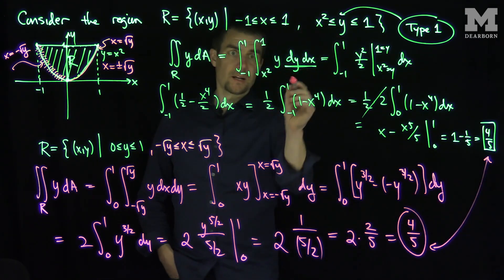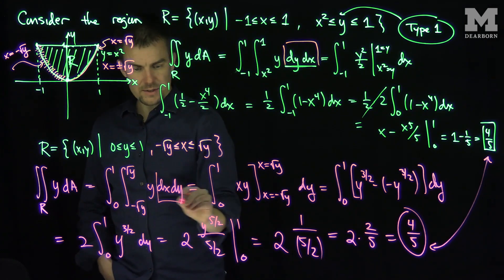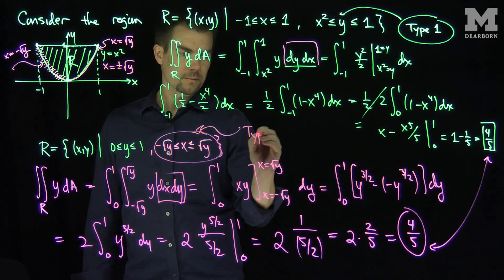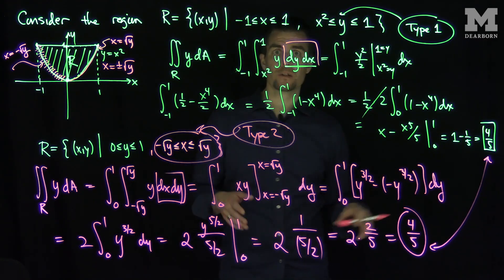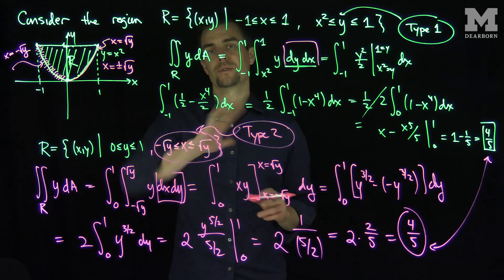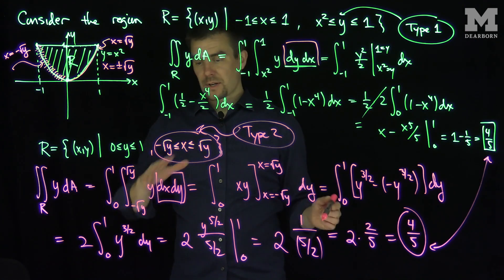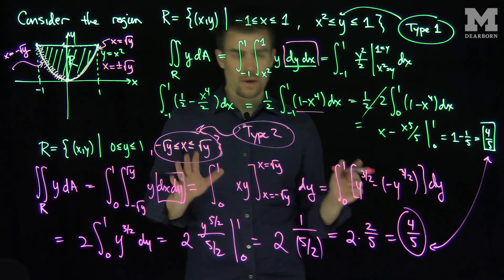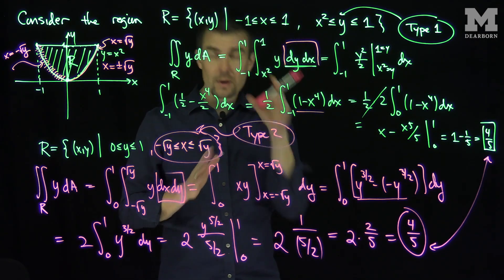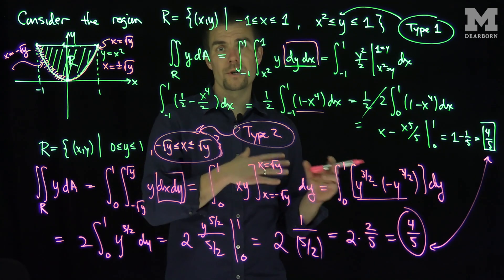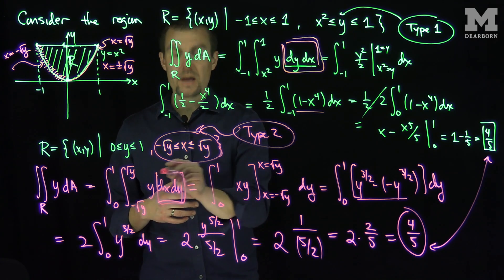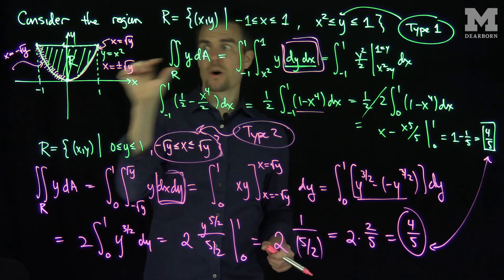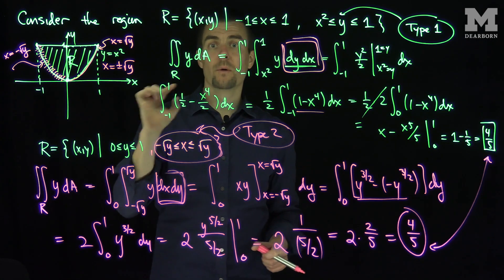Lo and behold, I get exactly the same answer whether I do the dy dx integral or the dx dy integral. When you have x between two functions of y, that's called a type 2 region. With these more general non-rectangular regions, it's often useful to write R as either a type 1 or type 2 region. You'll get two very different types of integrations — the first involves only polynomials, the second involves square roots — but both give the same answer. It's a bit of an art form deciding which way to go: dy dx or dx dy. Sometimes it's impossible to do the integral one way and you must do it the other way. Thank you very much.